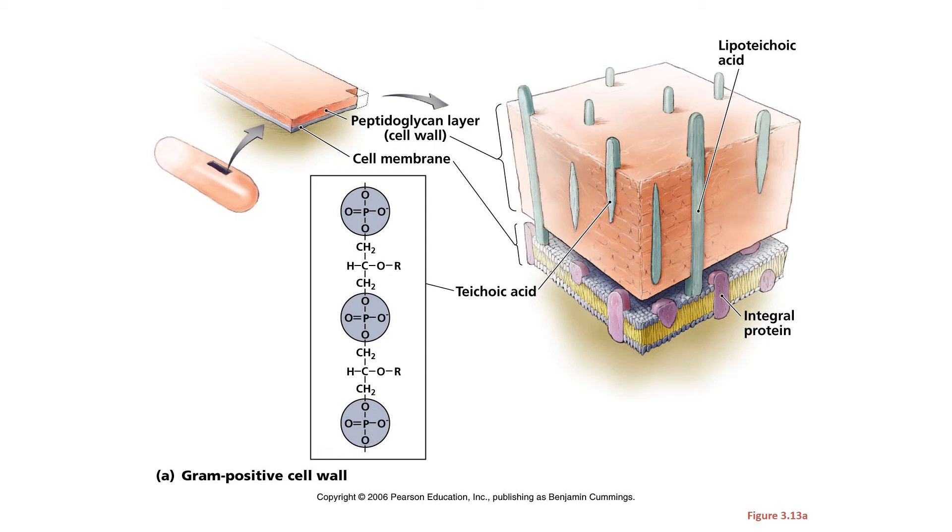They play a role in the overall charge of gram-positive bacteria and help in ion permeability through the wall. So we have this big thick layer of peptidoglycan that we have to get things to pass through if they're coming in or coming out of the cell.